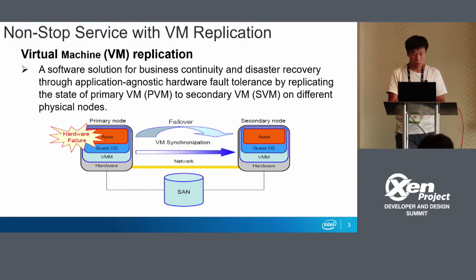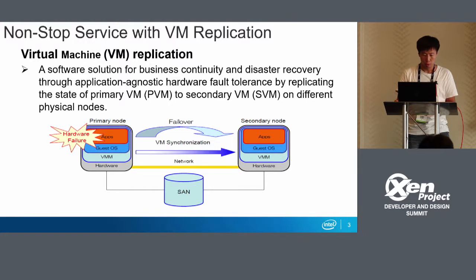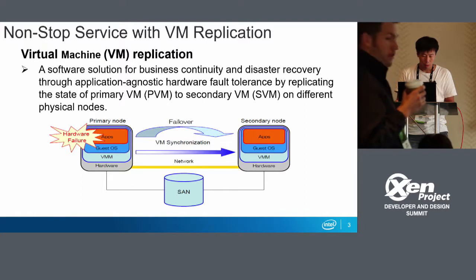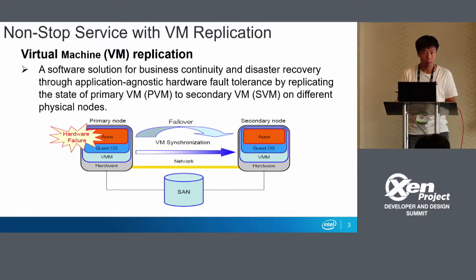So the hypervisor-level high availability solution shows its advantage. In this diagram, we can see we have two nodes: the primary node and the secondary node — both are physical nodes. The system will detect the failure and switch the service from the primary node to the secondary node. We name this a failover.